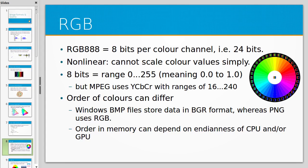RGB typically is a non-linear representation of colour. Non-linear means you can't just scale the values. If you chose a particular colour and wanted to make it brighter, you couldn't just add numbers to each channel equally, and you couldn't just multiply each channel by 1.2, because it is non-linear. Each of those 8 bits can store a range from 0 to 255, meaning from black or zero intensity up to 100% intensity.